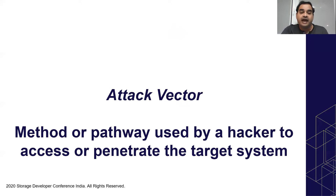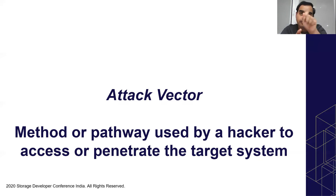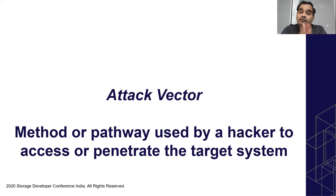An attack vector is a method or pathway by which an attacker gains access to a target system. For example, if you want to attack a house, the door is an attack vector, the window is an attack vector, the chimney can be an attack vector. The attacker can try to break the door, get a duplicate key, pick the lock, or break the window. These are the ways a house can be compromised — the different attack vectors.